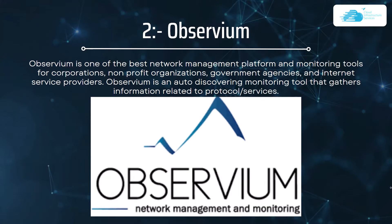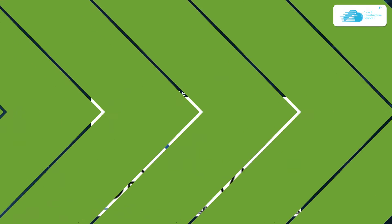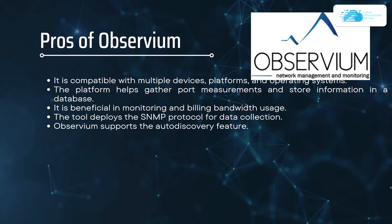Number two on our list is Observium. Observium is one of the best network management platform and monitoring tools for corporations, nonprofit organizations, government agencies, and internet service providers. It is an auto-discovering monitoring tool that gathers information related to protocols and services. It is compatible with multiple devices, platforms, and operating systems, helps gather port measurements and install information in a database, and is beneficial in monitoring and billing bandwidth usage. It deploys the SNMP protocol for data collection and supports the auto discovery feature.